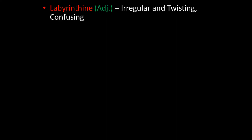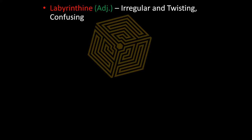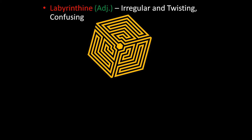The next word is labyrinthine. Labyrinthine is an adjective. It means irregular and twisting, confusing. The photo here shows a maze. If you are outside the maze and want to go to the center, you have to follow a confusing and irregular path — that is a labyrinthine path.